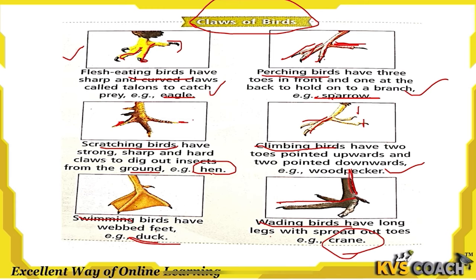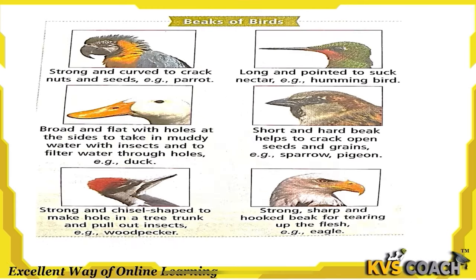Now we will discuss the beaks of birds. The first type is strong and curved, used to crack nuts and seeds. An example is the parrot, which has a strong and curved beak.